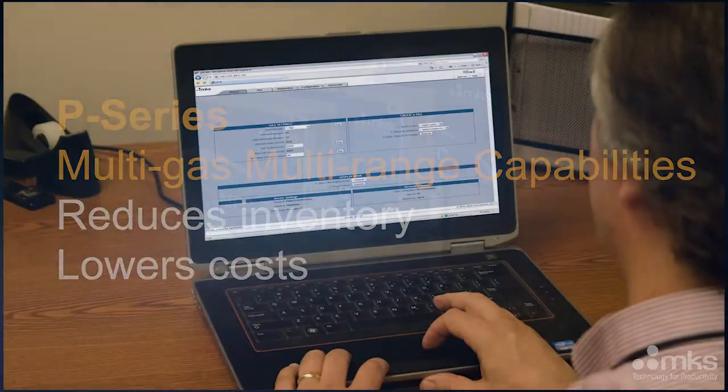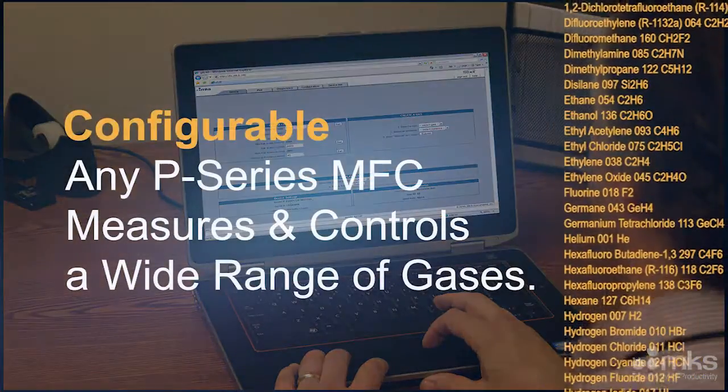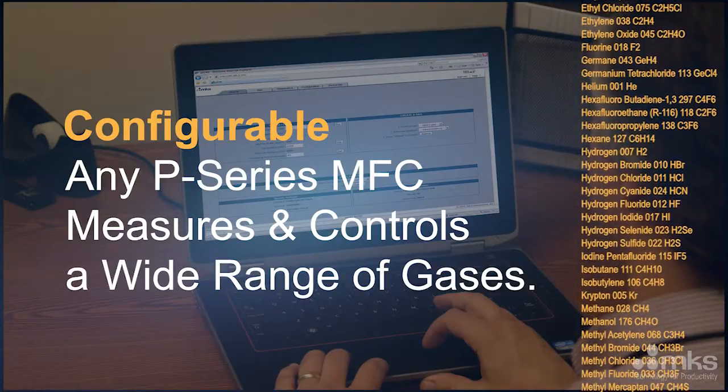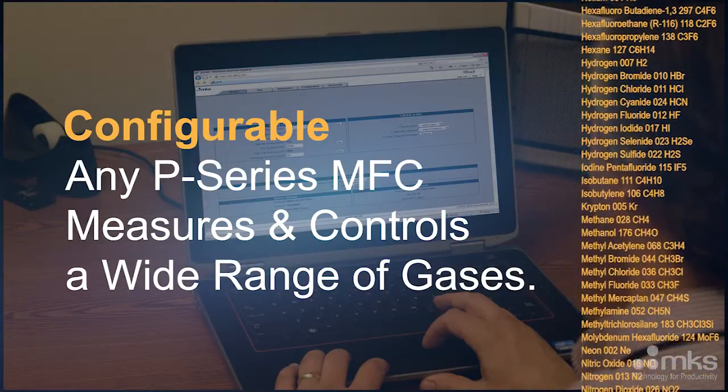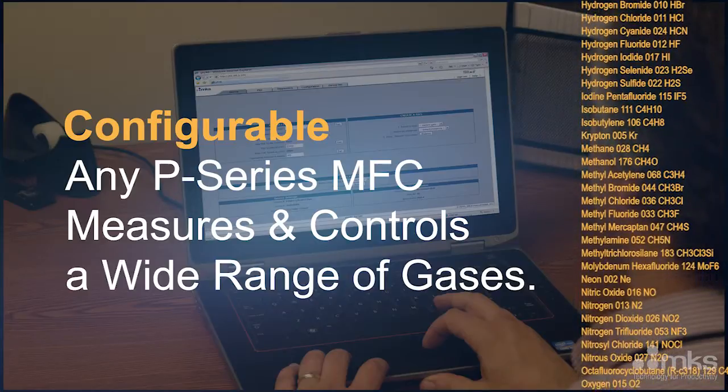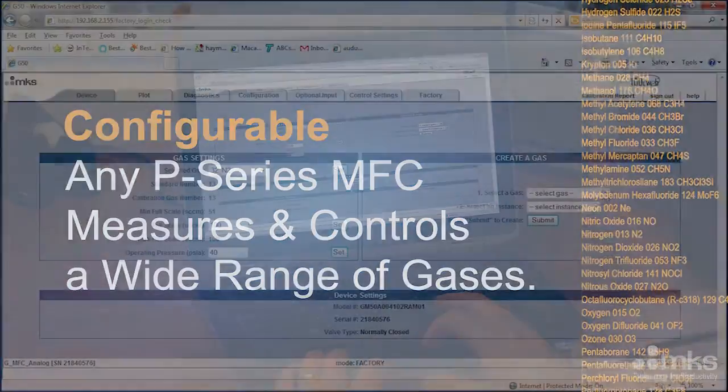Since a single P-Series model can be configured off the shelf for a specific gas and flow range. This multi-gas design enables any P-4, P-9, or P-250 MFC to measure and control over 100 process gases from light gases such as helium to heavy gases like SF-6, and the list is growing.